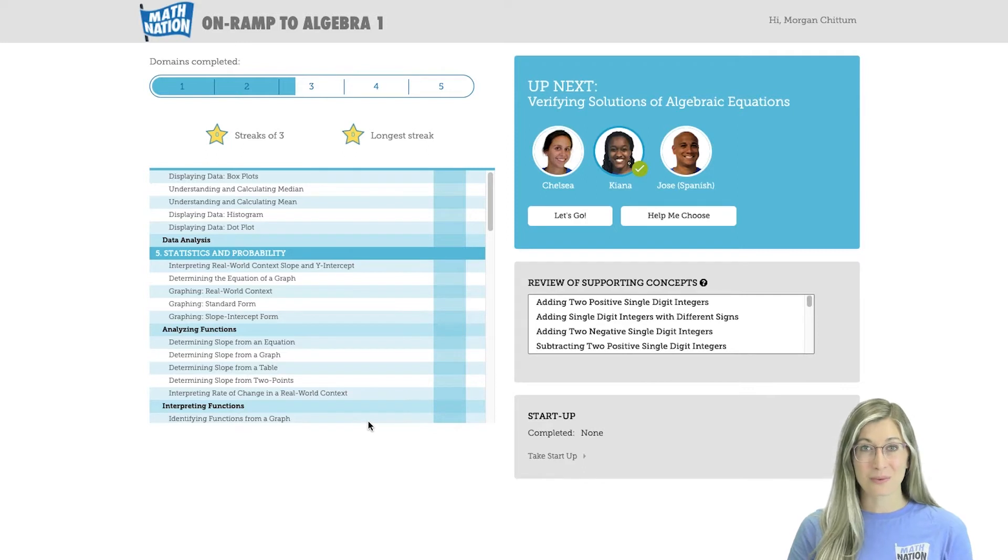Similarly, on-ramp to Algebra 1 helps students review and master pre-algebra concepts so they can be fully prepared to rock Algebra 1. These tools are personalized and can be used independently by students to learn and progress exactly how they need to. This is why on-ramp is the perfect resource to incorporate in your summer plans.